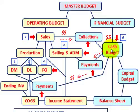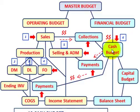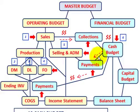Looking at this cash budget, we're going to have collections coming into it, and those are going to be coming from the sales budget under our operating budget. We're going to have those cash collections coming in, and then our outflows — payments or expenditures that are going to have to be made to our selling and administration area, coming from our selling and administration budget. We also have payments for production operations: direct materials, direct labor, and factory overhead.